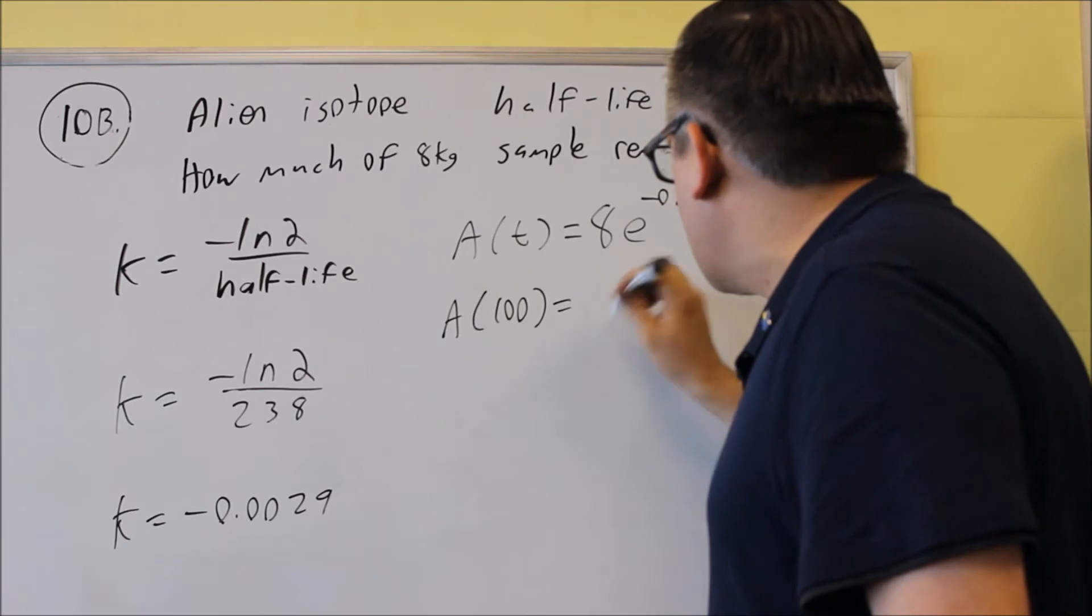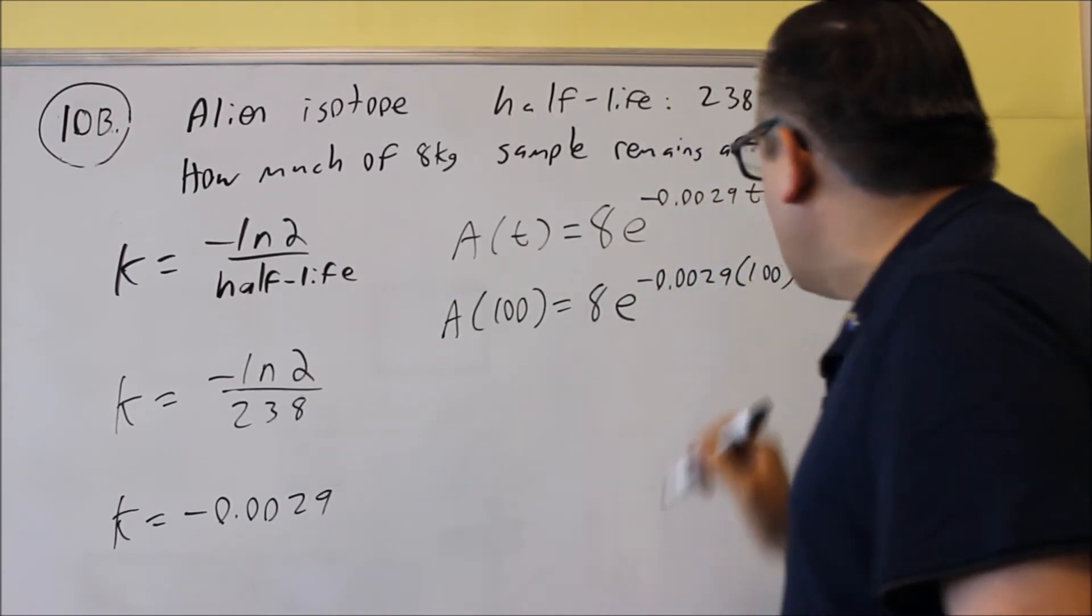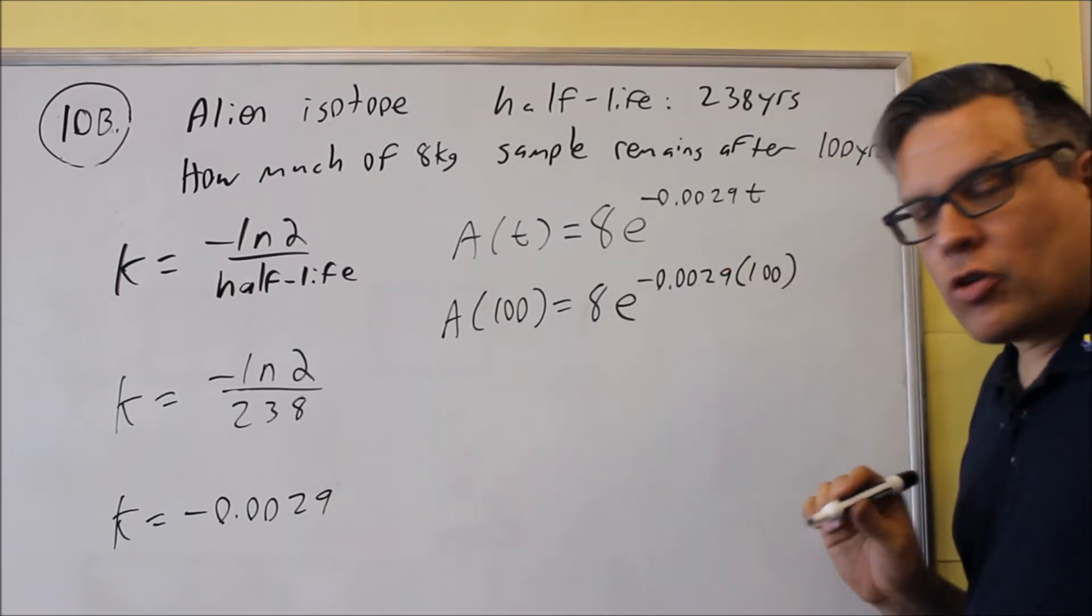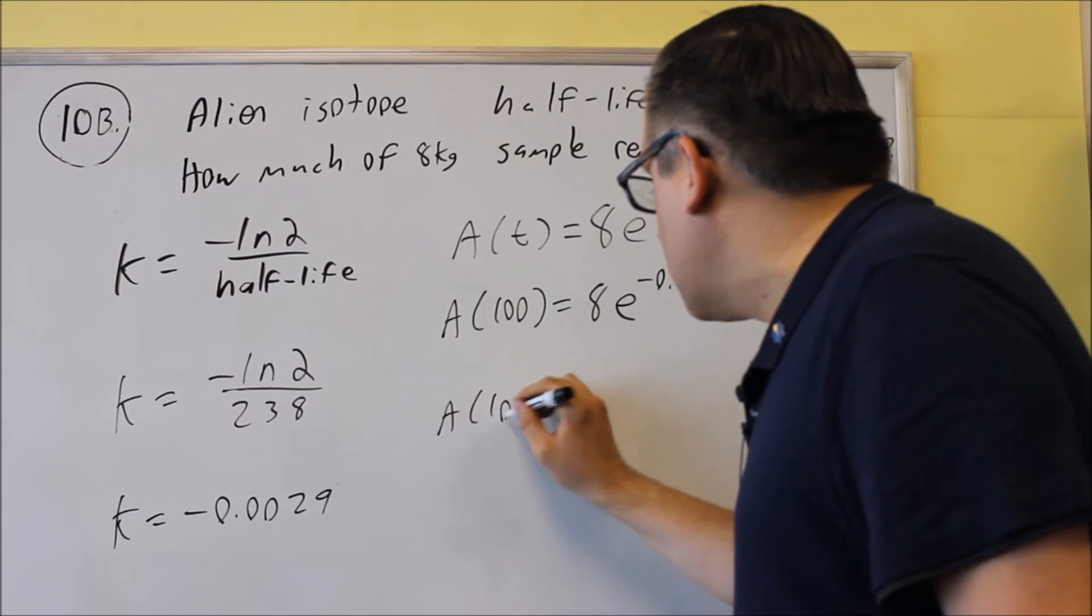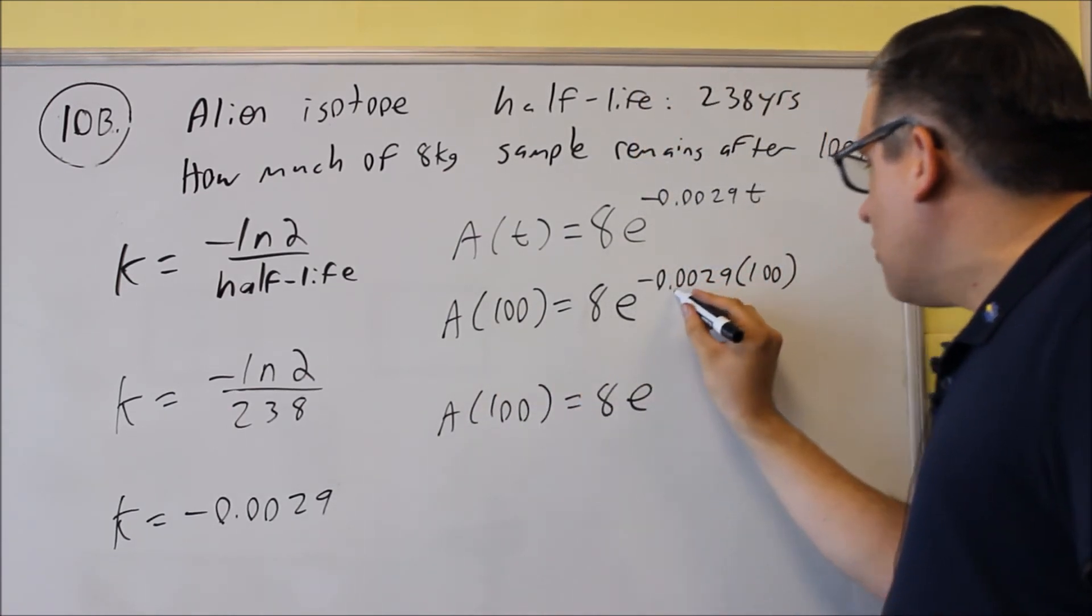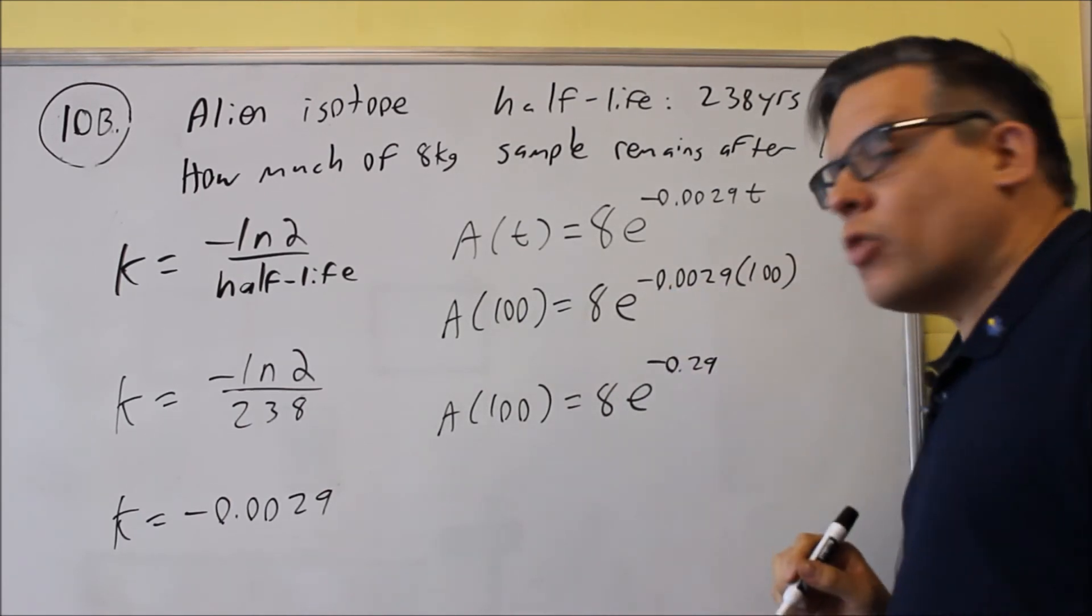This is going to give us 8e to the negative 0.0029 times 100. We're going to do the exponent part first. So we're going to get 8e to the negative—this is going to move the decimal place over two places—so negative 0.29.